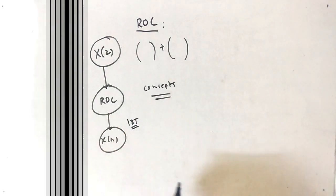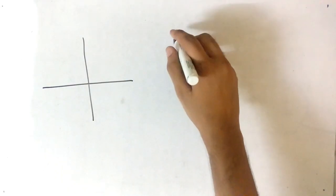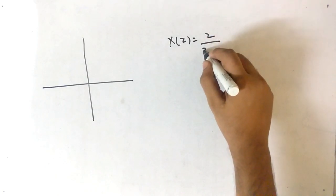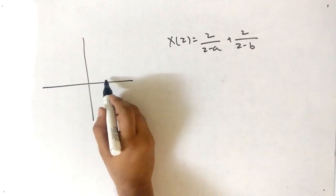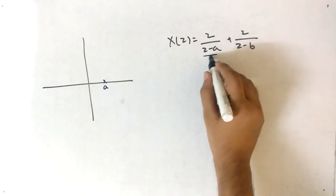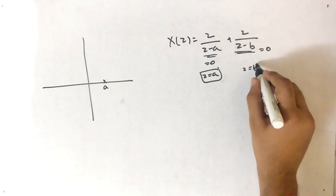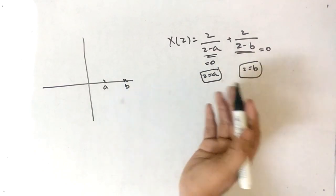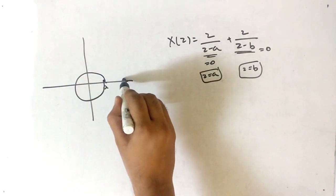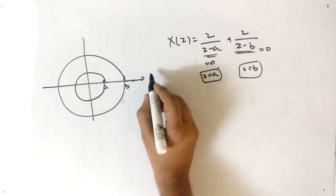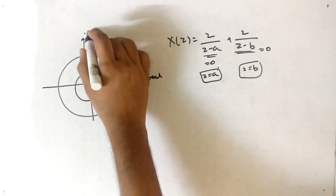Let's start. Suppose X(z) = z/(z-a) + z/(z-b). Setting each denominator to zero gives poles at z=a and z=b. Assuming b > a, plot both on the z-plane with real part on the u-axis and imaginary part on the jv-axis, then draw circles around each pole.